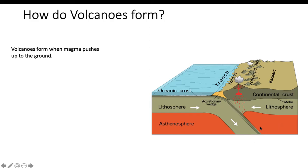When the oceanic plate moves into the mantle, it melts and forms magma. The magma pushes itself up and digs through to the crust and spools out. When the magma gets out onto the crust on land, we call it lava. That's how a volcano can form from a convergent boundary.